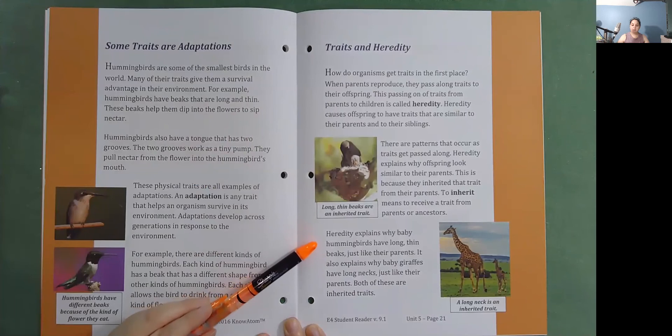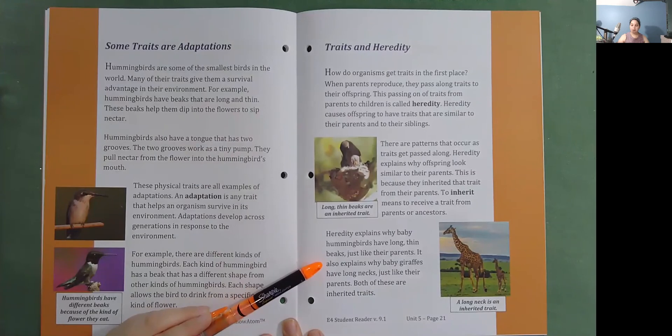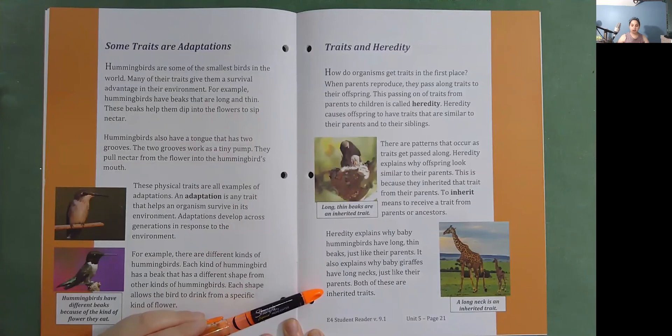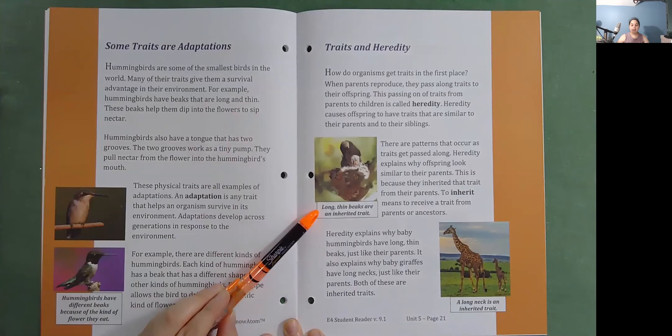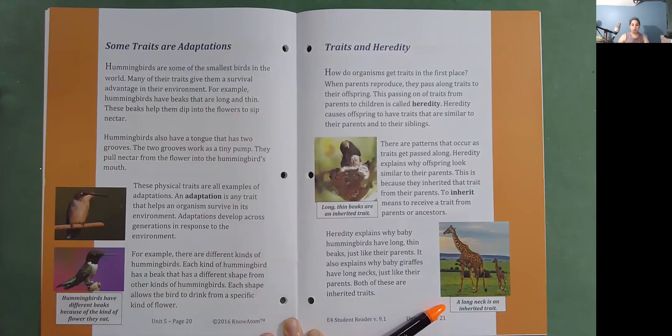Heredity explains why baby hummingbirds have long thin beaks just like their parents. It also explains why baby giraffes have long necks just like their parents. Both of these are inherited traits. Long thin beaks are an inherited trait. A long neck is an inherited trait.